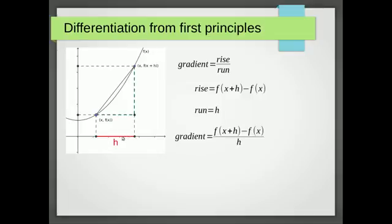In fact, as h gets closer and closer to 0, the gradient gets closer and closer to the gradient that we require. And the gradient at that point is called dy by dx. So we end up with dy by dx equals the limit as h goes to 0. That means as h gets very close to 0, if we let it go to 0, of f of x plus h minus f of x over h.